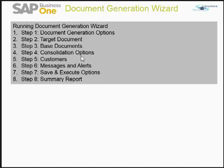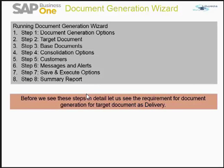You can define how SAP Business One responds to missing data, bookkeeping, or inventory issues. You can choose how the wizard should act: you can execute the wizard, save the parameters and then execute, or save the parameters for a future run and exit. Finally, you can view a summary of the target documents created per customer, as well as any errors and warning messages.